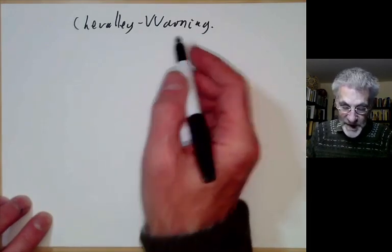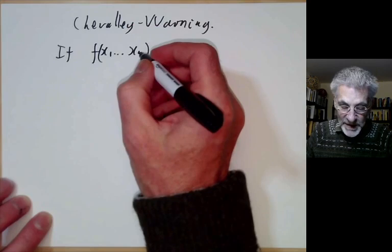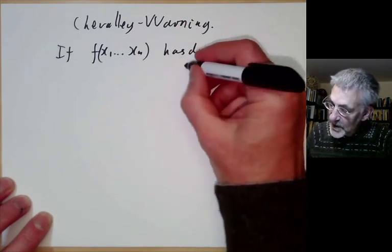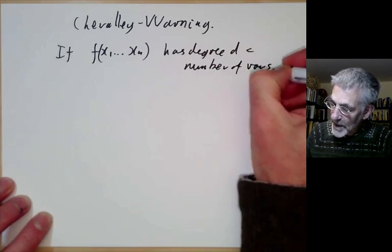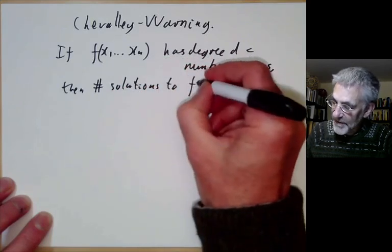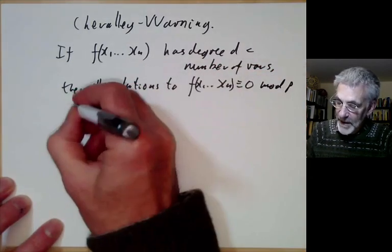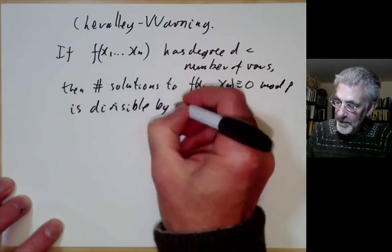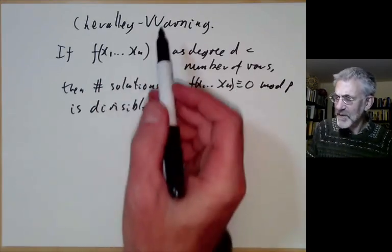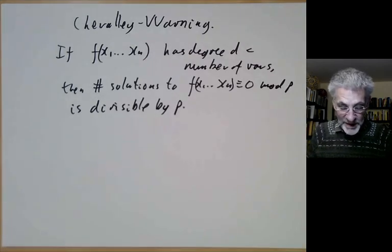The Chevalier-Warning theorem says that if we have a polynomial f in x1 up to xn as variables with degree less than the number of variables, then the number of solutions to f(x1...xn) ≡ 0 mod p is divisible by p. So it gives a very general condition under which you know something about the number of solutions. There are some generalizations saying that under various conditions the number of solutions is divisible by a power of p, but we'll just do the simplest case.